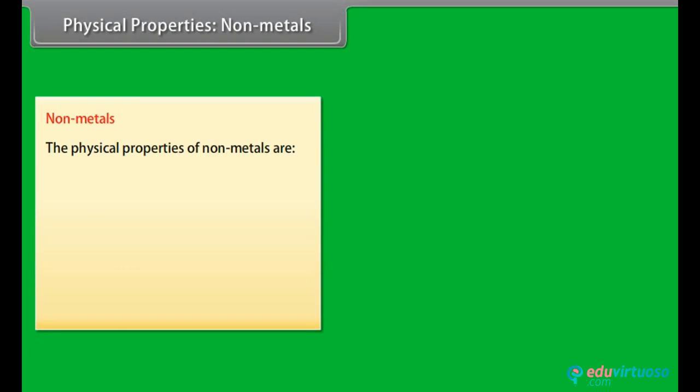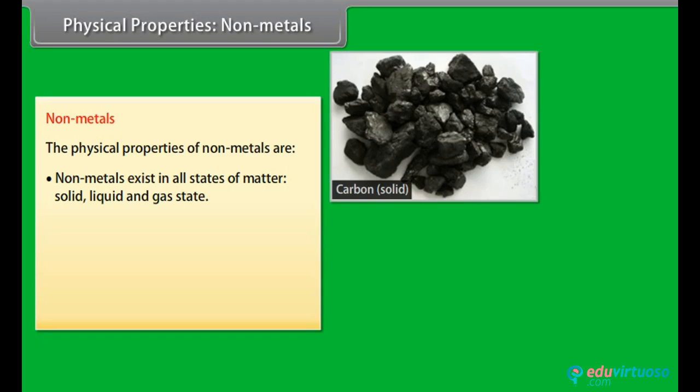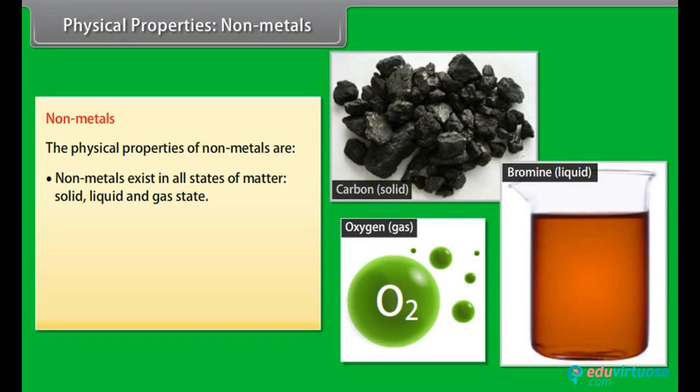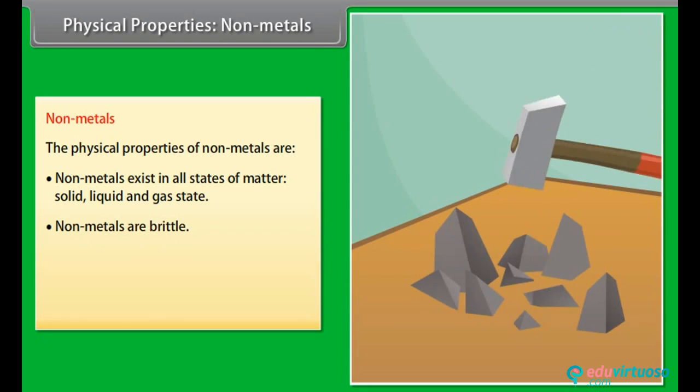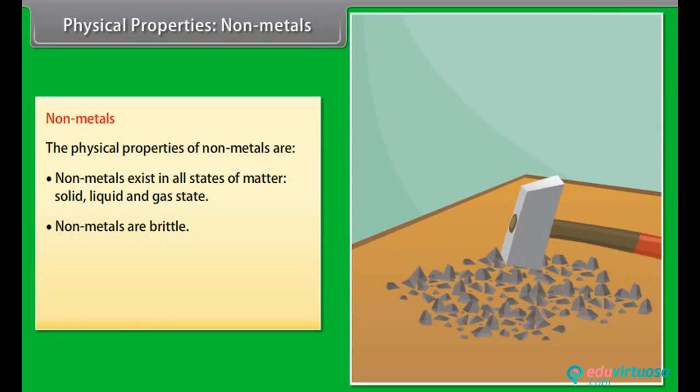Physical properties: Non-metals. Let us now look at the physical properties of non-metals. Physical state: Non-metals exist as solid, liquid or gases at room temperature. Gas: Oxygen, Chlorine, Fluorine. Liquid: Bromine. And solid: Carbon. Non-malleable and non-ductile: Non-metals are brittle and cannot be rolled into wires or beaten into sheets.